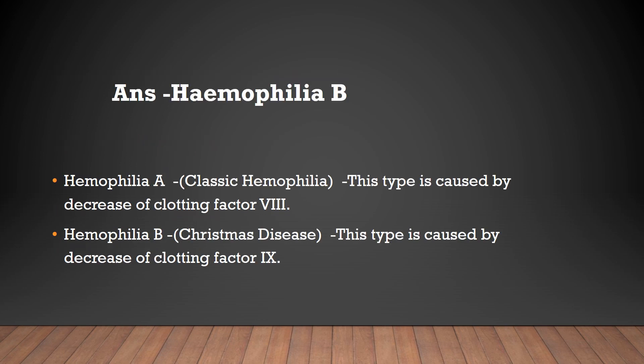Haemophilia B. Haemophilia A is known as classic haemophilia and is caused by a decrease of clotting factor 8. Haemophilia B is known as Christmas disease and is caused by a decrease of clotting factor 9.